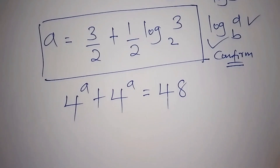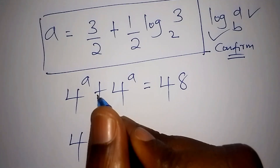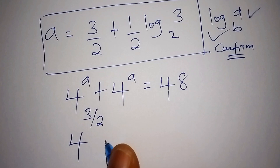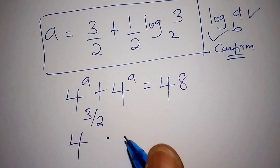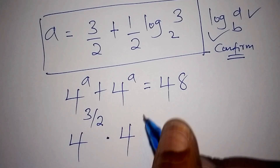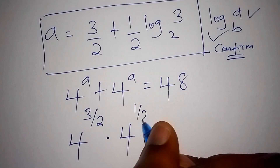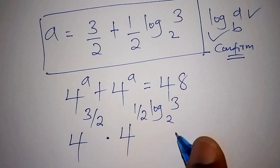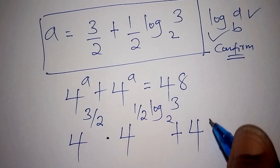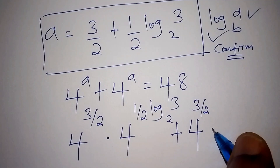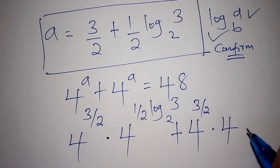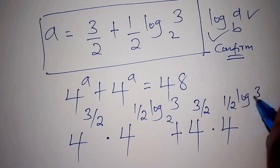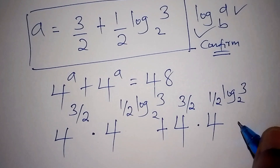Substituting a equals 3 over 2 plus one-half log base 2 of 3, we have 4 to the power of (3/2), multiplied by 4 to the power of (½ log₂3), plus 4 to the power of (3/2) multiplied by 4 to the power of (½ log₂3), and all of this should give us 48.